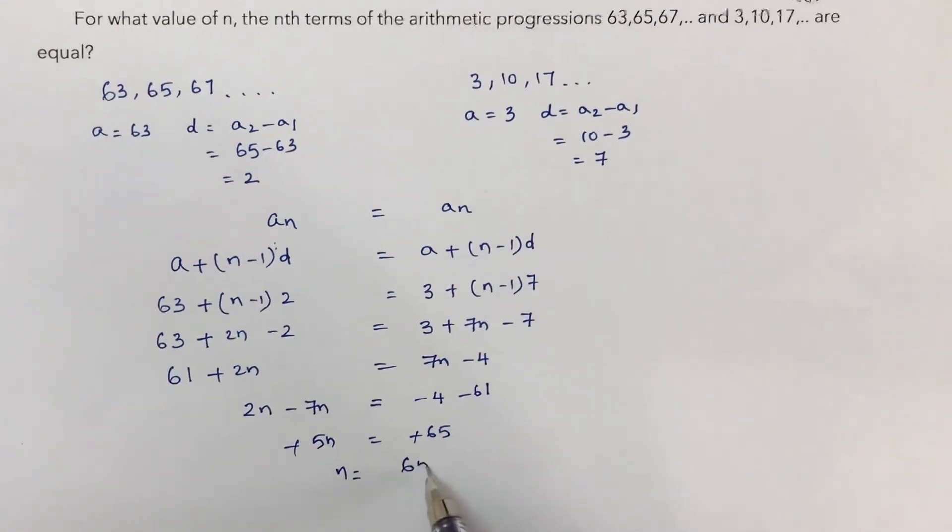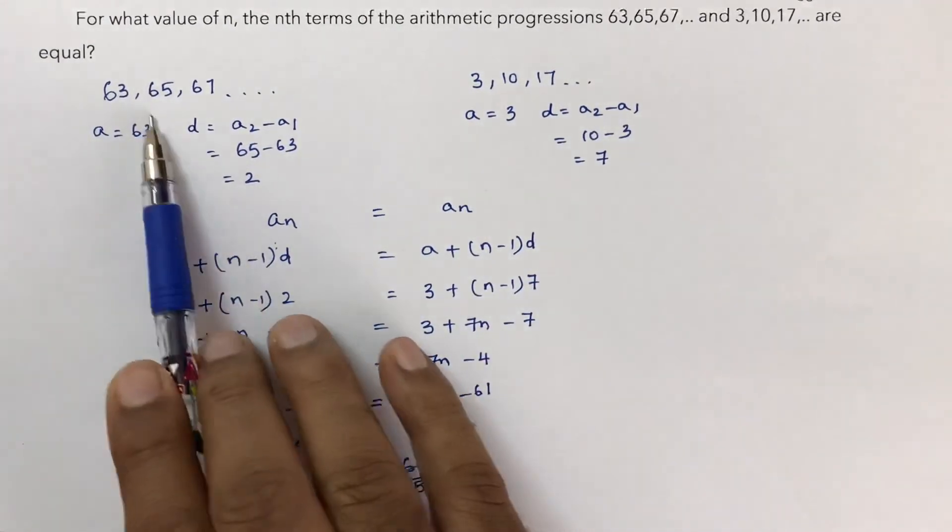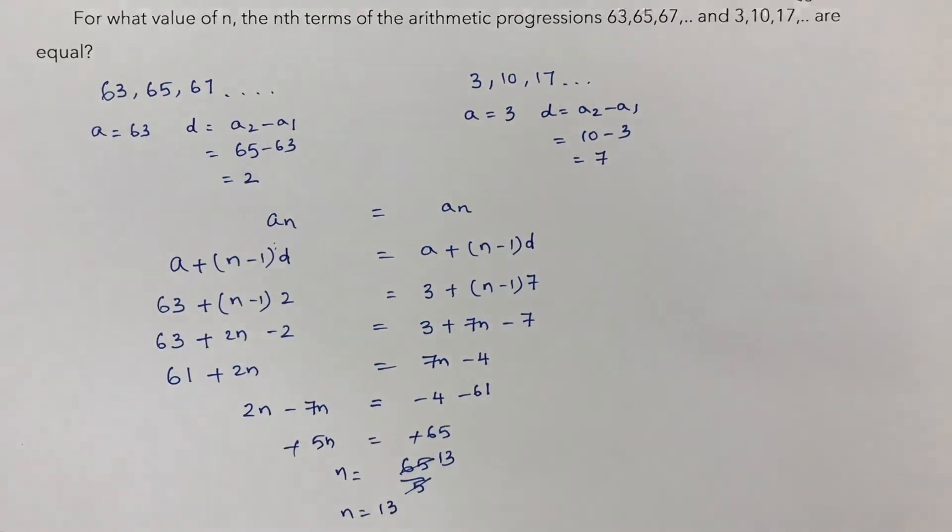n is 65 by 5, that is 5 times 13, so n equals 13. So for what values of n the nth terms of the arithmetic progressions are equal? In this series the 13th term and in this series the 13th term are equal.